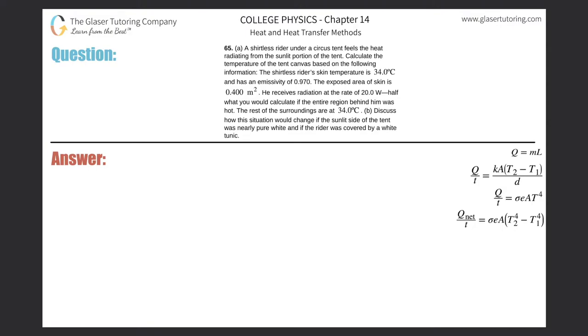Number 65. A shirtless rider under a circus tent feels the heat radiating from the sunlit portion of the tent. Calculate the temperature of the tent canvas based on the following information. The shirtless rider's skin temperature is 34 degrees Celsius and has an emissivity of 0.97. The exposed area of the skin is 0.4 meters squared. He receives radiation at the rate of 20 watts, half of what you would...